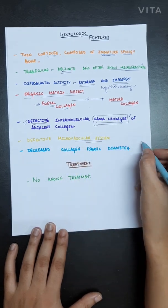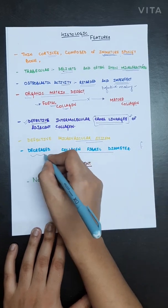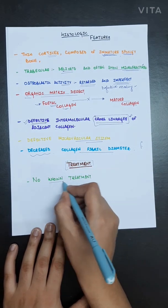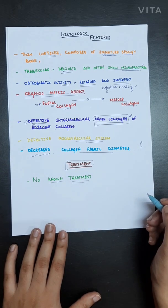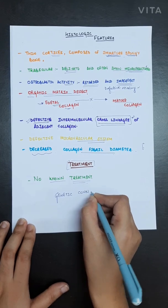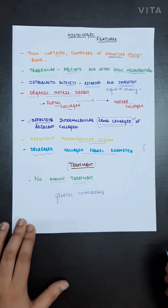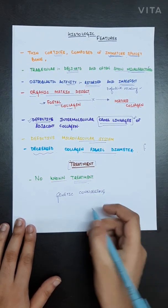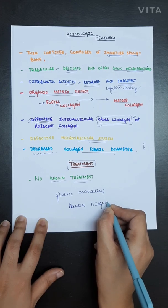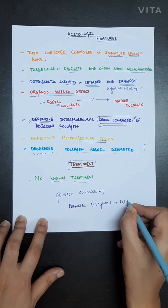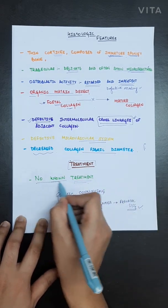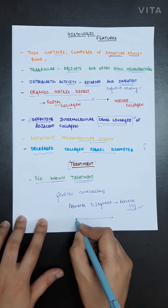There is also a defective microvascular system and decreased collagen fibril diameter. No known treatment for osteogenesis imperfecta exists yet, but genetic counselling plays a major role, and prenatal diagnosis via ultrasonography can be performed.